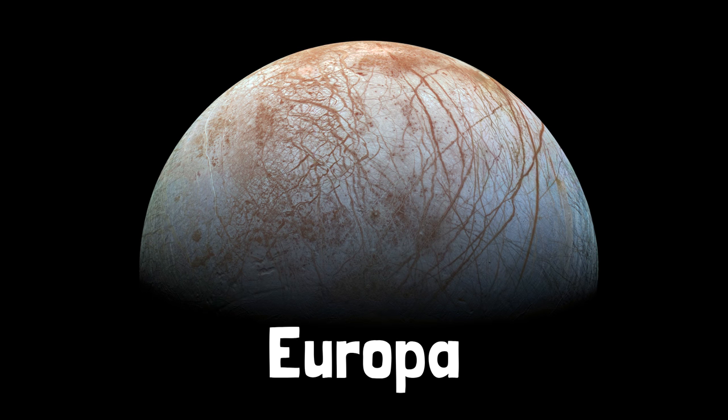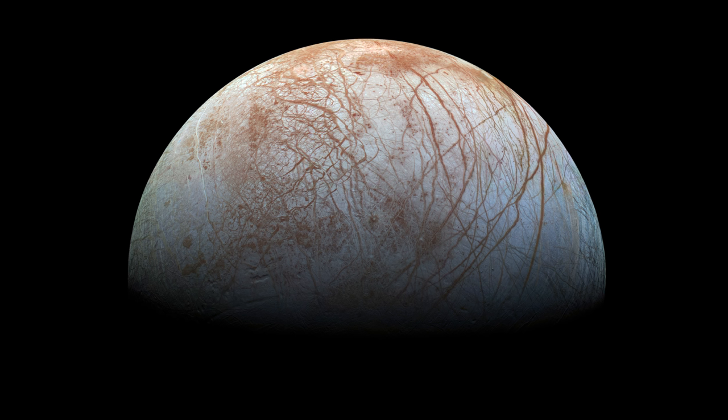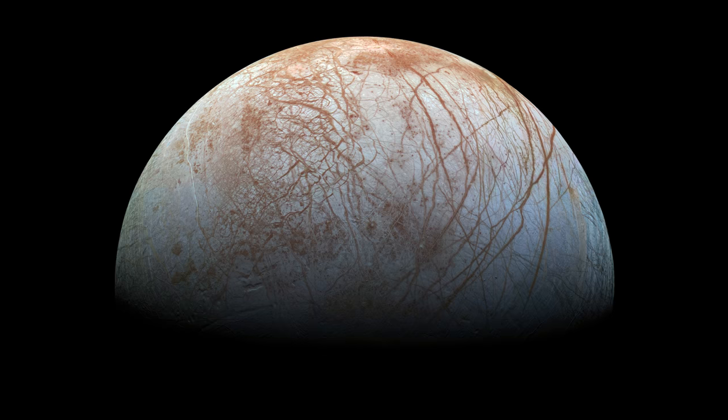This is an image of Jupiter's moon Europa, taken by the Galileo spacecraft in 1998. You'll probably notice that Europa's surface, which is made of ice, has tons and tons of cracks.